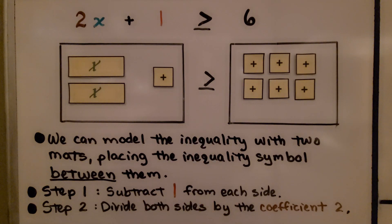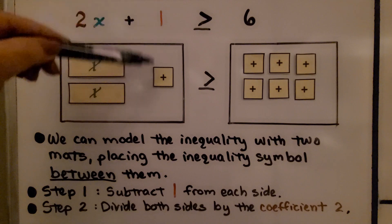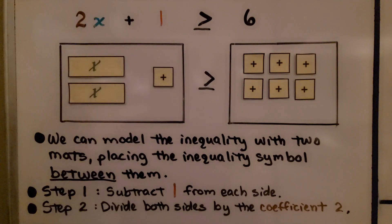This is a two-step inequality because we have two steps. Step 1 would be to subtract this constant from each side, and step 2 would be to divide both sides by this coefficient 2. That's why it's called a two-step inequality. It takes two steps to solve it.